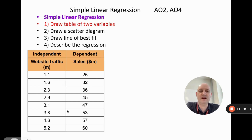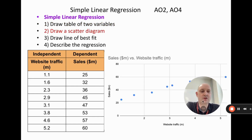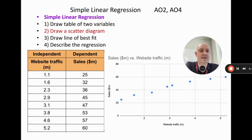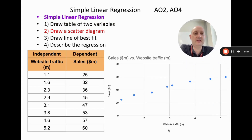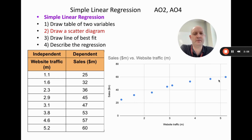I'm speculating that the more customers we have on the website, the higher the sales, and we can see that from the table. The next thing we do is draw a scatter diagram. Here we've got the independent variable — website traffic in millions — on the x-axis, and sales as the dependent variable on the y-axis. You can see what looks like a positive relationship.